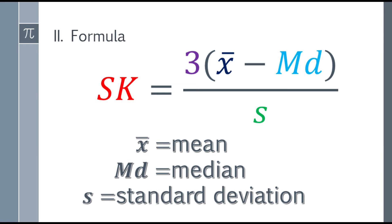So SK is the coefficient of skewness. Then the numerator part, that will be three times the mean minus median. So three times the quantity mean minus median over the standard deviation.